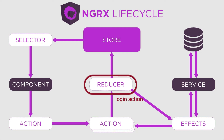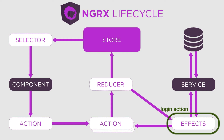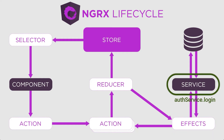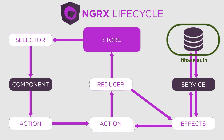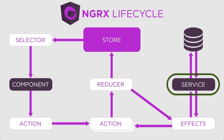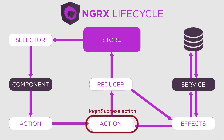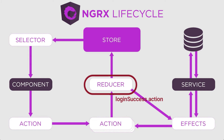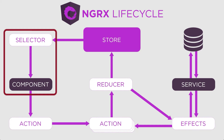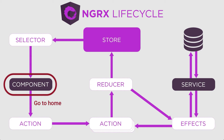When the login action comes to the reducer, the effects will realize the user is trying to login, so the effects will call the auth service login function, which will try to login by calling the backend — in our case the Firebase authentication sign-in. At some point, Firebase will respond with success or error. If it responds with success, the service takes that response back to the effect, and the effect calls the login success action. The reducer handles that action, changes the login state, and the login page sees the login was successful and takes the user to the home page.